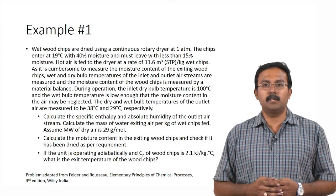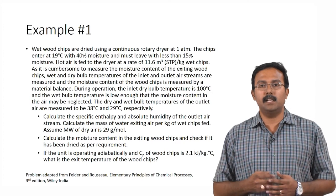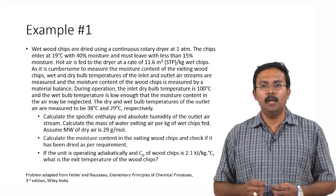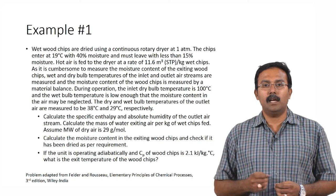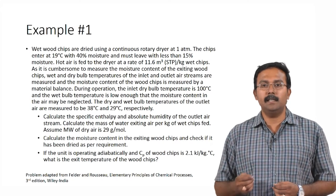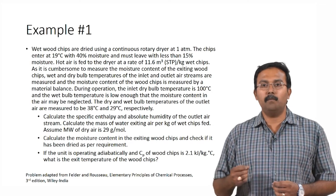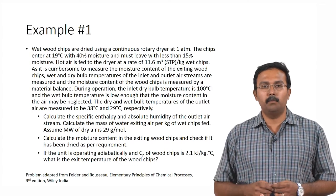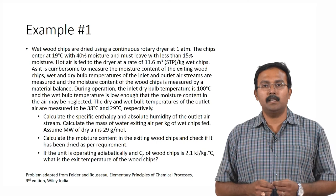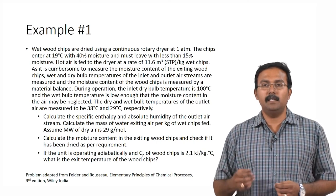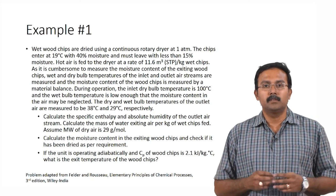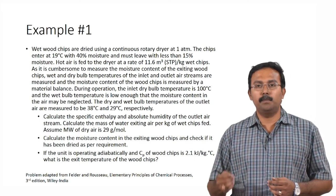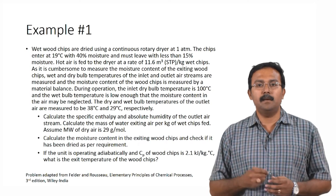The dry and wet bulb temperatures of the outlet air are measured to be 38°C and 29°C respectively. You are asked to calculate the specific enthalpy and absolute humidity of the outlet air stream, the mass of water exiting with air per kilogram of wet chips fed, and the moisture content of the exiting wood chips. The molecular weight of dry air is 29 g/mol.